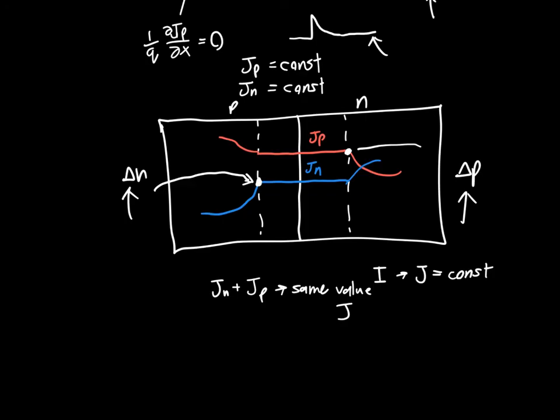In the next video we're going to apply a simplified version of the continuity equation with all the assumptions we've just made, along with some more, and we're going to figure out what the total current is through the PN junction diode. I hope you enjoyed the video. If you have any questions or comments feel free to post them below, and I'll see you next time.